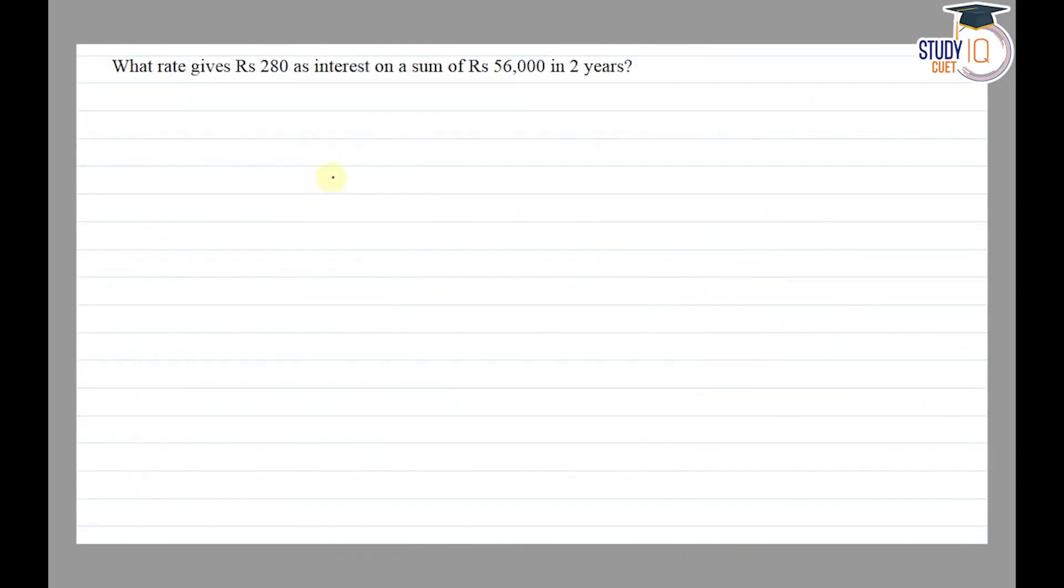Hello everyone, this question appears in class 7th NCERT chapter of comparing quantities. This is the 10th question of exercise 8.3. The question says, what rate gives rupees 280 as interest on a sum of rupees 56,000 in two years? So we have SI given here.